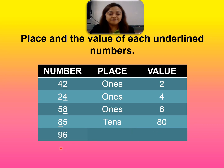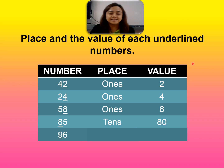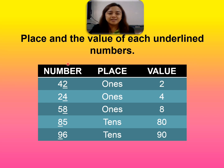Next, we have ninety-six. The underlined number is on the left — the number is nine. The place is tens, and the value is ninety. So that's the place and the value of numbers.